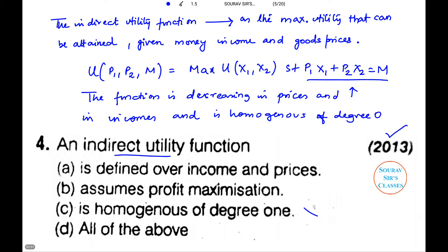So this cancels out option C - it says degree 1. Profit maximization is not done here; we are maximizing utility. And it is defined over income and prices. So A will be the correct answer to this particular question.